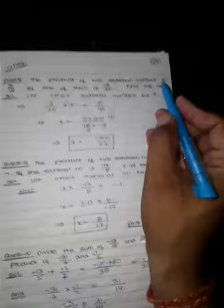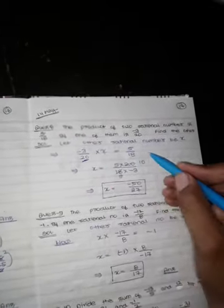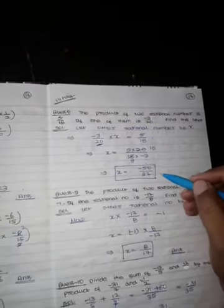Question number 8: the product of two rational numbers is 5 upon 18. If one of them is 3 upon 10, we have to find the second. The first number times the second number is equal to 5 upon 18. We will solve for the value.